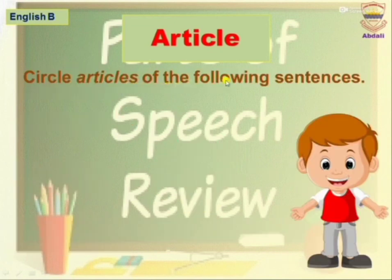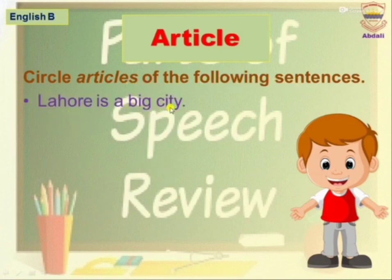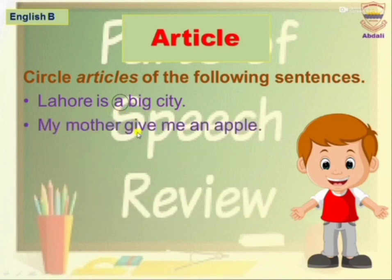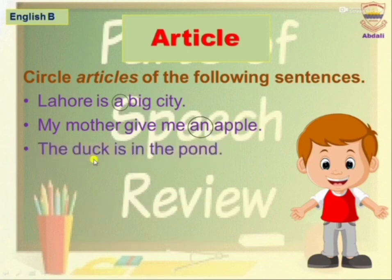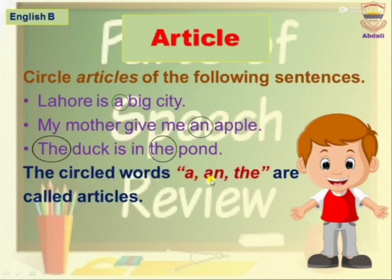Circle the articles in the following sentences. Maher is a big city — in this sentence, a is an article. My mother gave me an apple — in this sentence, an is an article. The duck is in the pond — in this sentence, the is an article. So the circled words a, an, and the are called articles.